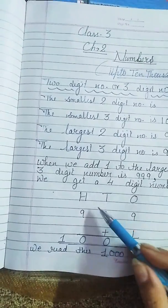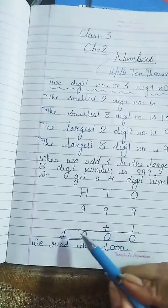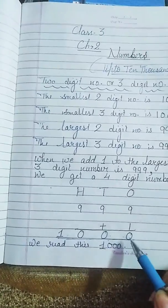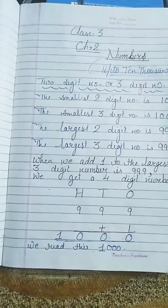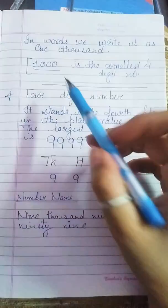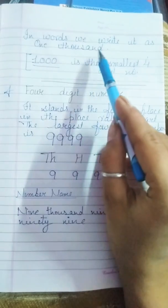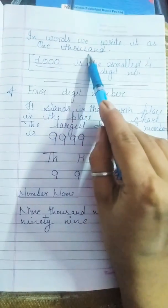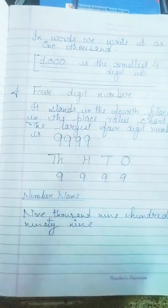Toh humara paas kya digit ahi? 1, 0, 0, 0. Toh we read this as 1000. In word we write as 1000, T-H-O-U-S-A-N-D. 1000 is the smallest 4-digit number.